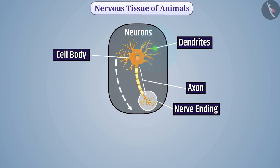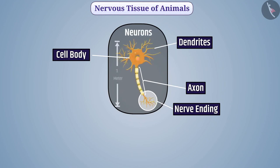The stimulus in the neuron is conducted in only one direction — from dendrites to the terminal end of the neuron. One nerve cell, i.e., neuron, can be one meter in length.